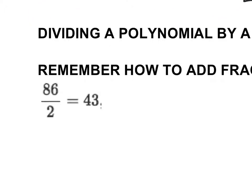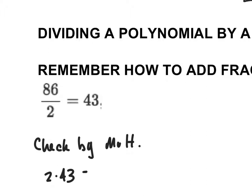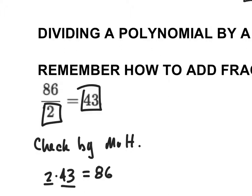The first thing I want to look at is something like 86 divided by 2. If you want to check your division, you can always check by multiplying. If I do 2 times 43, that should give me 86. So if you take your divisor and multiply it by your quotient, you should get your dividend — the 86. Take your denominator, multiply it by your quotient, and you should get your numerator.